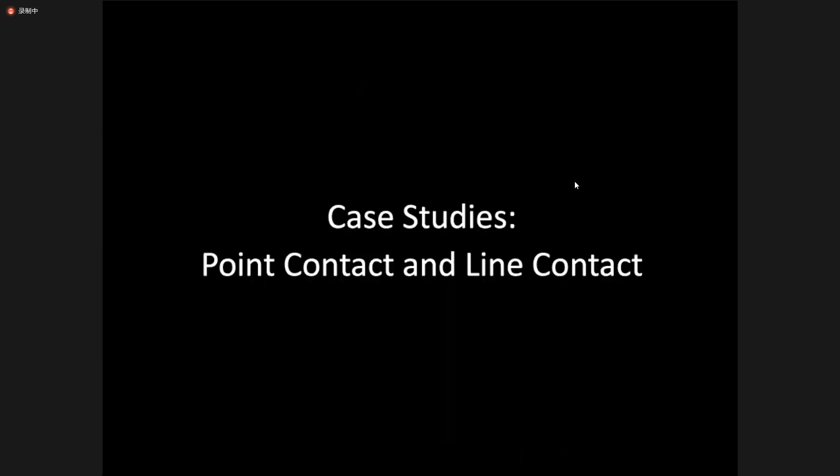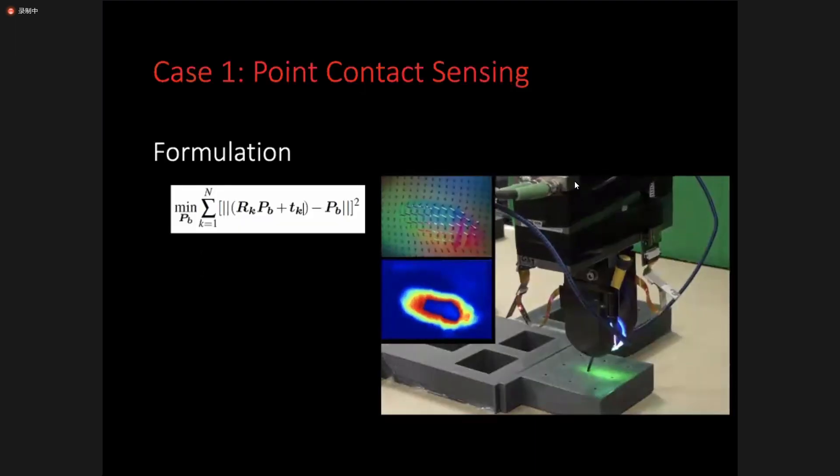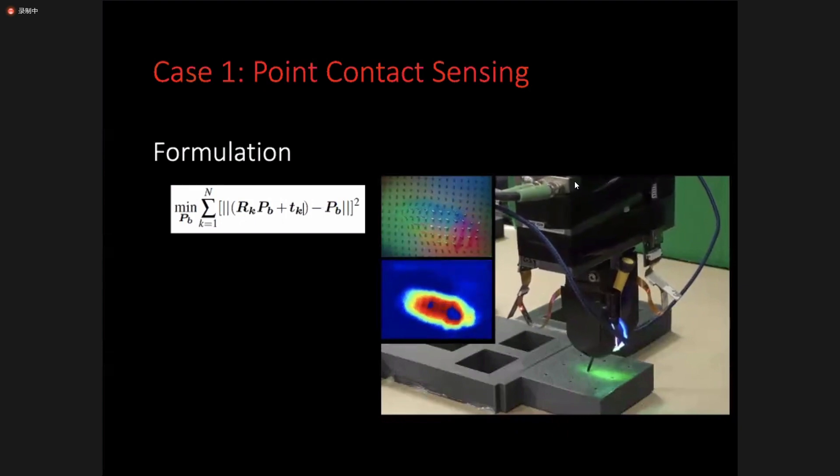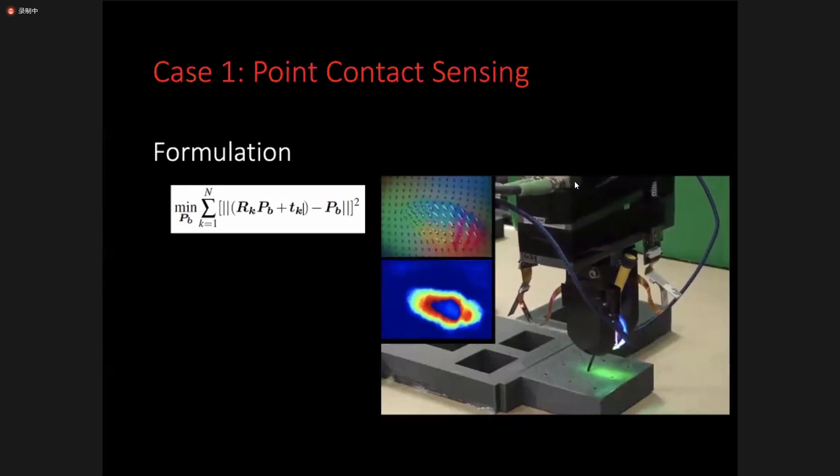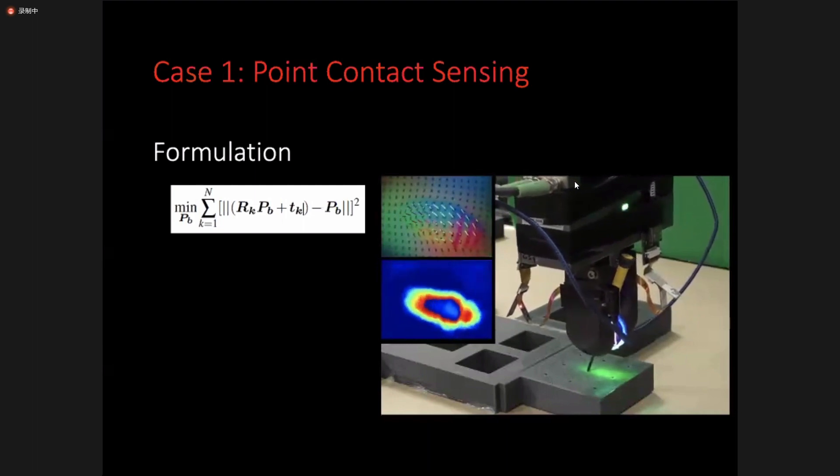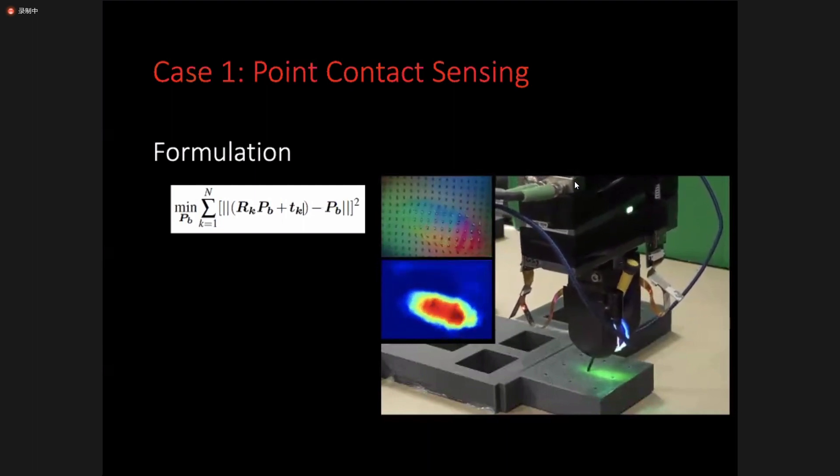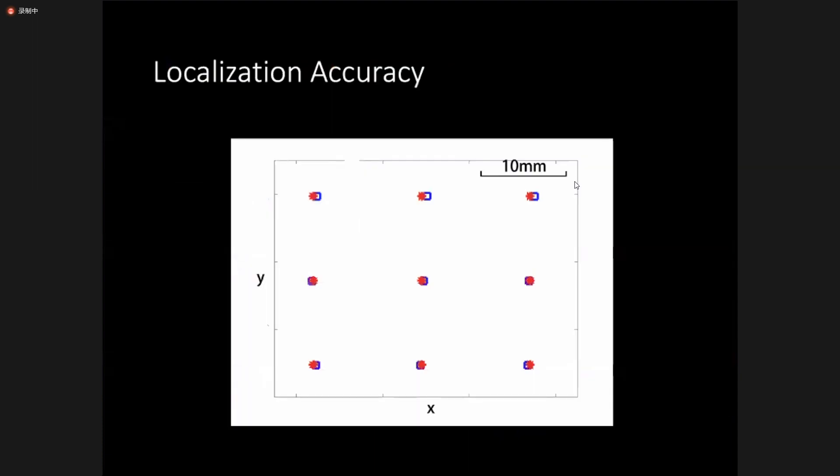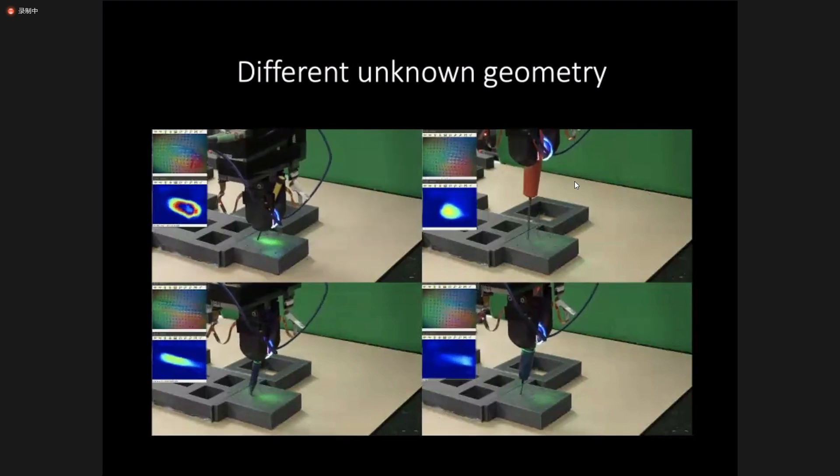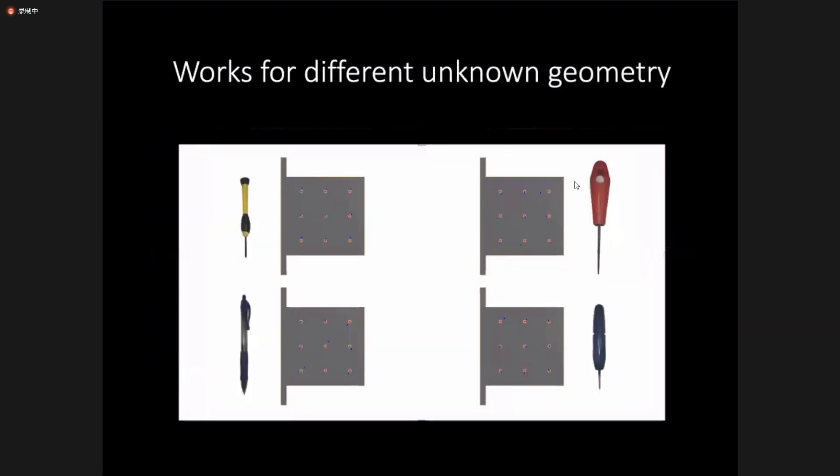Then we validate the extrinsic contact sensing framework with two case studies, the point contact and the line contact. Formulation of a point contact is an optimization like this. The robot has grasped a tool and the tool is in contact with the environment. The hand moves a little bit to allow passive exploration. And then the tactile measurements are used to localize the screwdriver's contact with the environment. It's worth noting that the motion we can track is 3D. We achieve very accurate estimation for the extrinsic contact locations. Here the red dots represent the ground truth and the blue represents the estimation. We tested the framework on four different objects. Without knowing precise knowledge for any of them, good estimation is achieved for all of them.